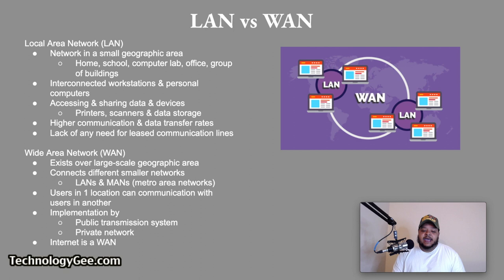Let's talk about LAN versus WAN. A local area network, also known as a LAN, is a computer network within a small geographic location, such as a home, school, computer laboratory, or office building. A LAN is composed of interconnected workstations and personal computers, each capable of accessing and sharing data and devices such as printers, scanners, and data storage devices. LANs are characterized by higher communication and data transfer rates and the lack of any need for leased communication lines.